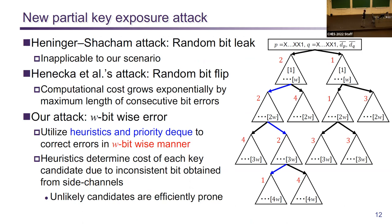A new partial key exposure attack is also proposed. The key idea is performing the partial key exposure attack assuming W-bitwise errors, while existing attacks assume error bits are uniformly distributed. To correct W-bitwise errors efficiently, heuristics and a priority queue are utilized to perform a branch-and-prune strategy.